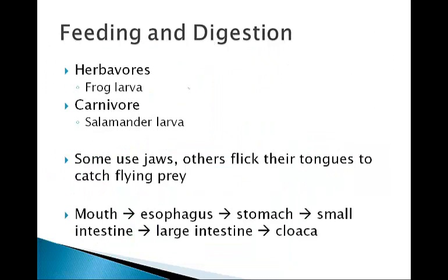If we talk about feeding and digestion, as larvae, amphibians can either be herbivores or carnivores. Frogs have larvae that are herbivores, while salamander larvae are carnivores. Now, as these both become adults, they become carnivores. They are essentially predators of insects and other small animals.